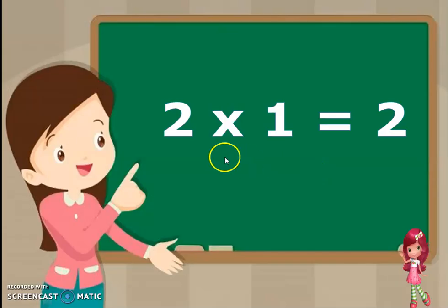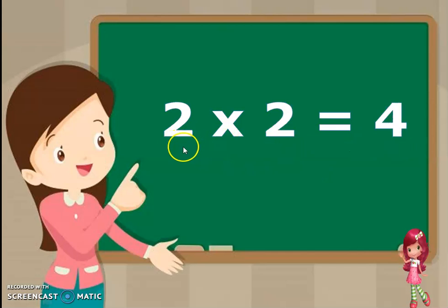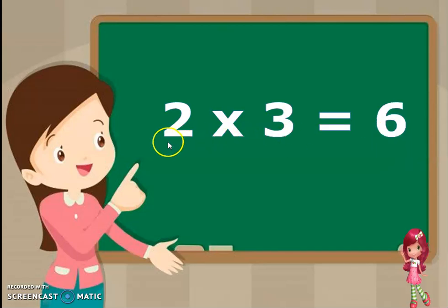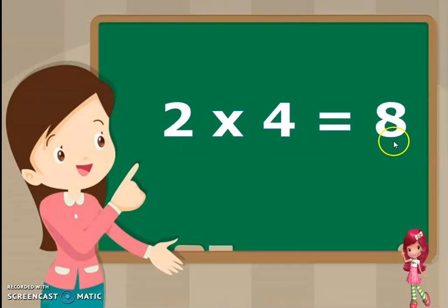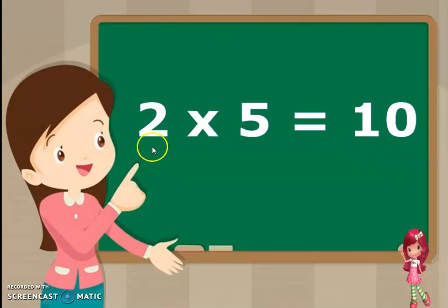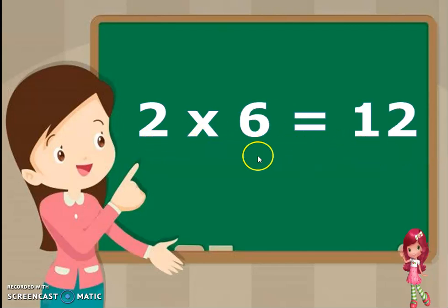Let's begin. 2 1s are 2, 2 2s are 4, 2 3s are 6, 2 4s are 8, 2 5s are 10,